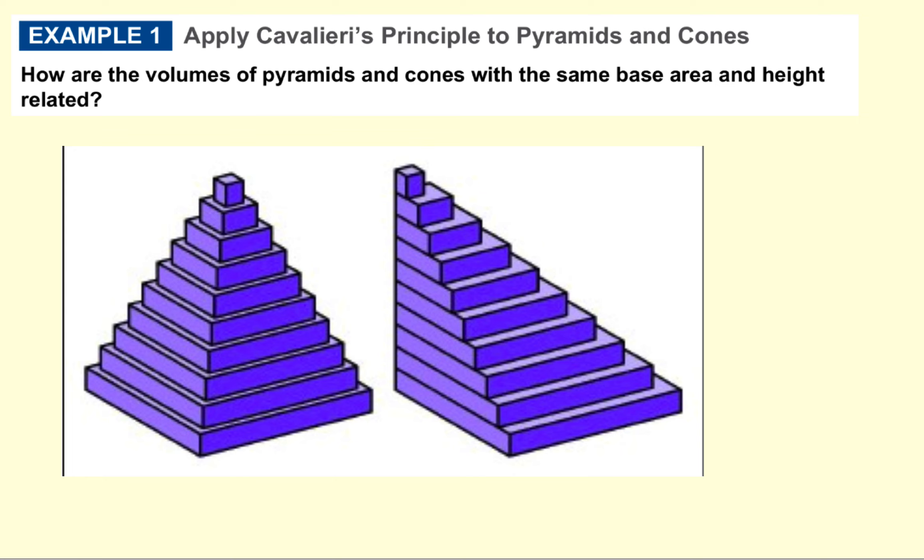Let's take a look at Cavalieri's Principle for Pyramids. How are these volumes of pyramids with the same base and height related? Notice they all have the same cross-section, might not be lined up the same way, but since they have the same cross-section and the same height, we say these two volumes are equal.